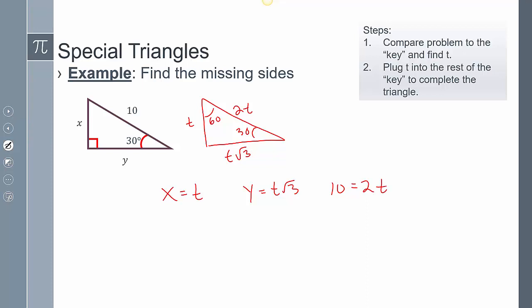Solving for each of these, divide both sides by 2, I'm going to get t equals 5. Now that I've compared this problem, I can take this value and plug it back into the other problems to complete the triangle. I'm going to get x equals 5 and y equals 5 root 3.